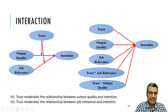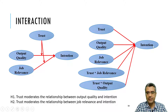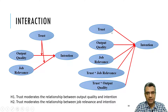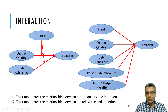This is how you show your model in your research model usually. We have a moderator here — trust impacts the relationship between output quality and intention, and trust impacts the relationship between job relevance and intention. There are two interaction effects to test. In the developed model, the two independent variables are there, the dependent variable is there, then the moderator acts as another exogenous variable, and the interaction terms — trust multiplied by output quality and trust multiplied by job relevance — are the other two exogenous variables.